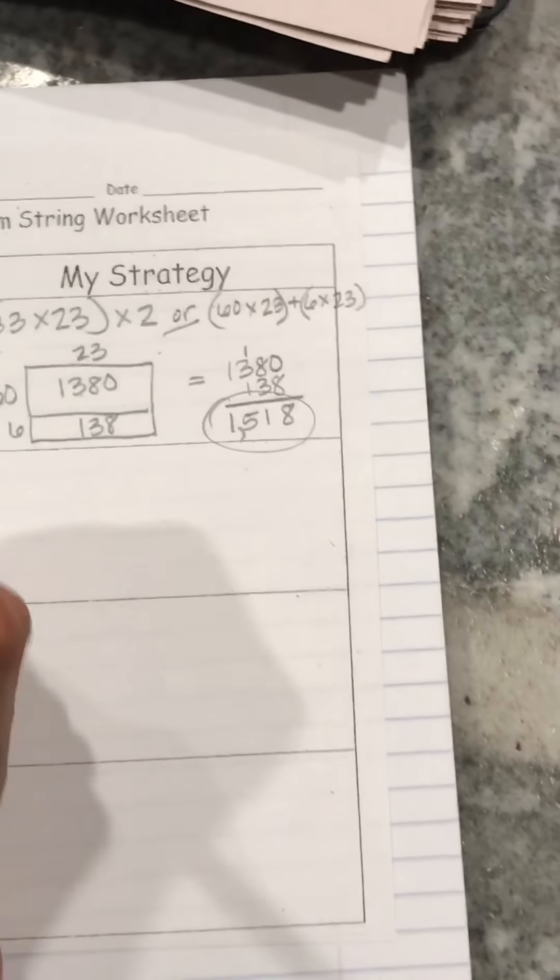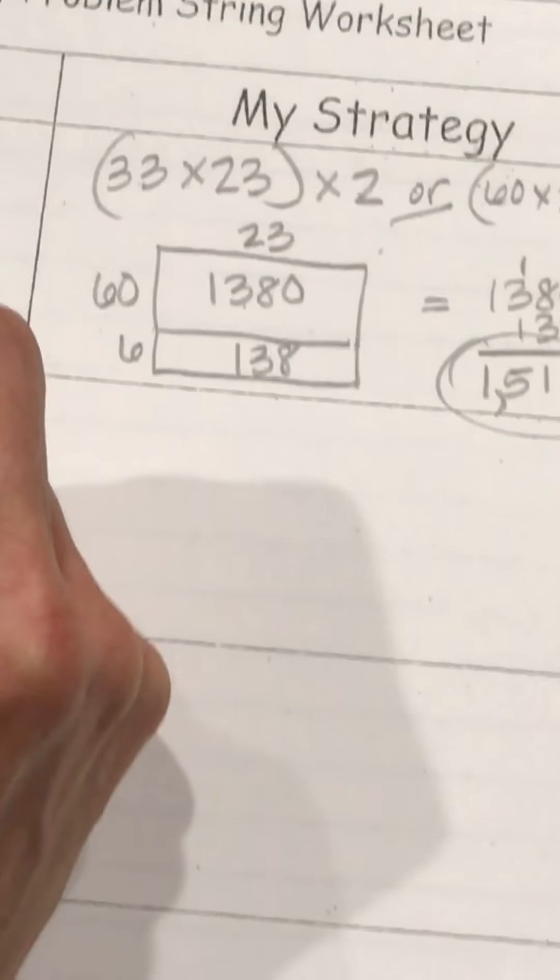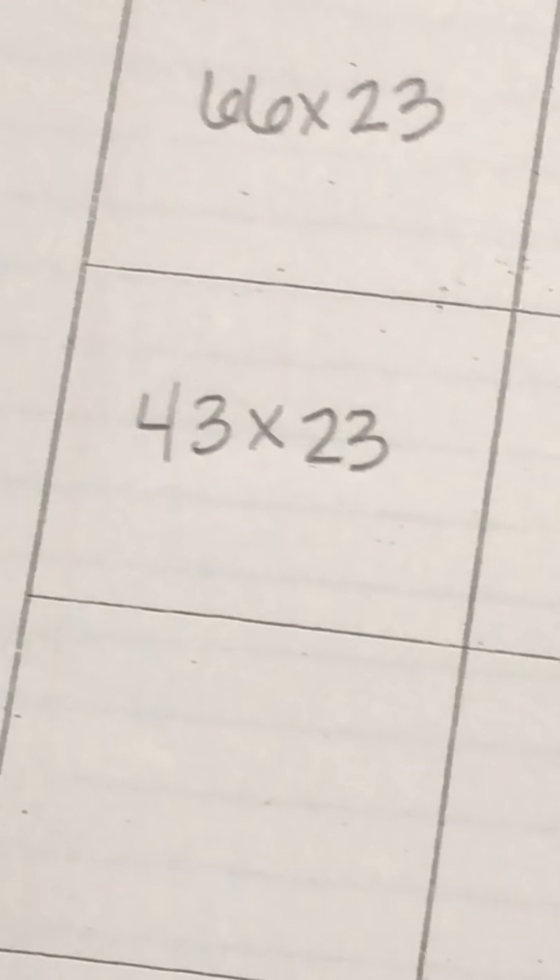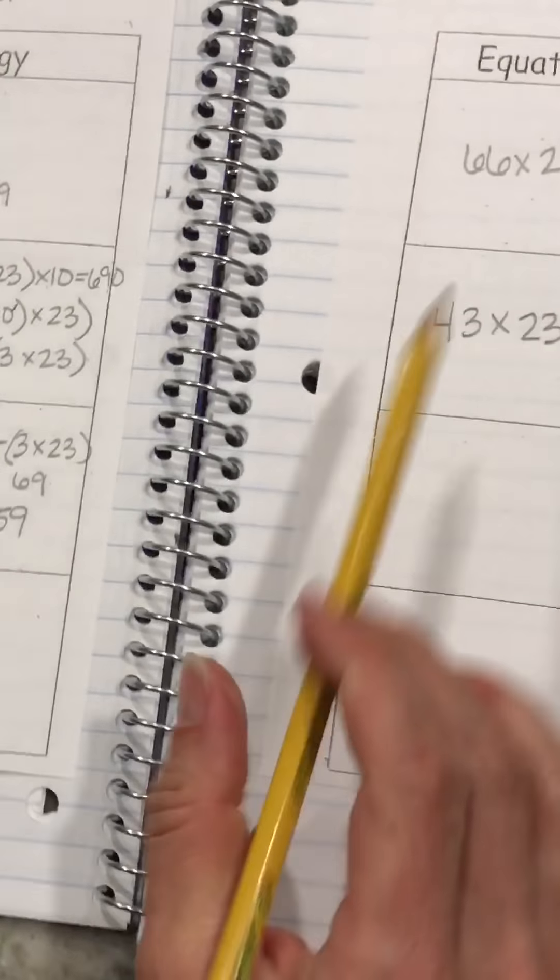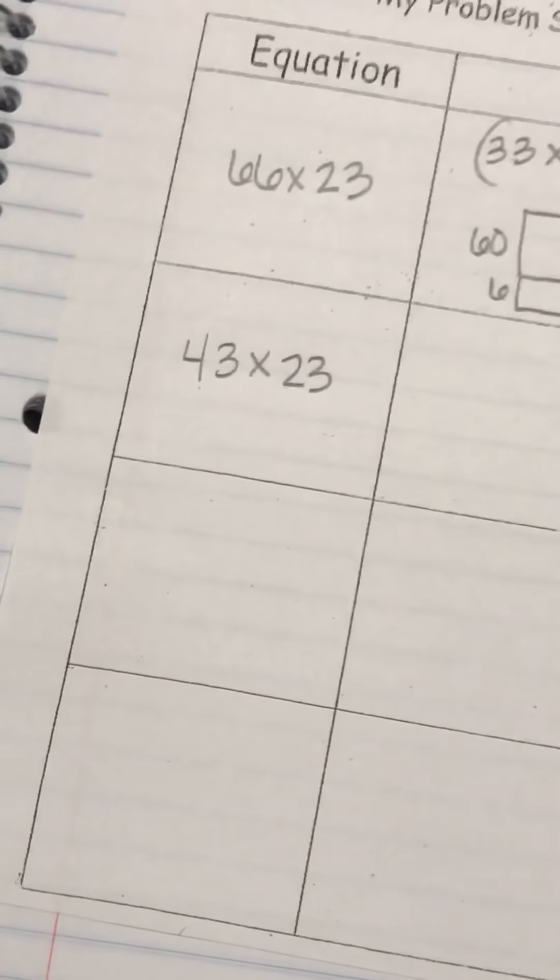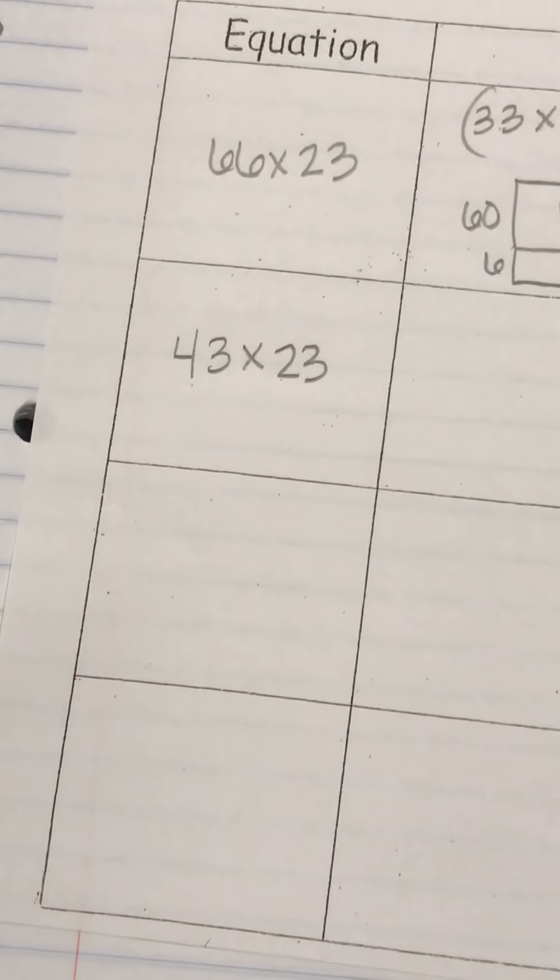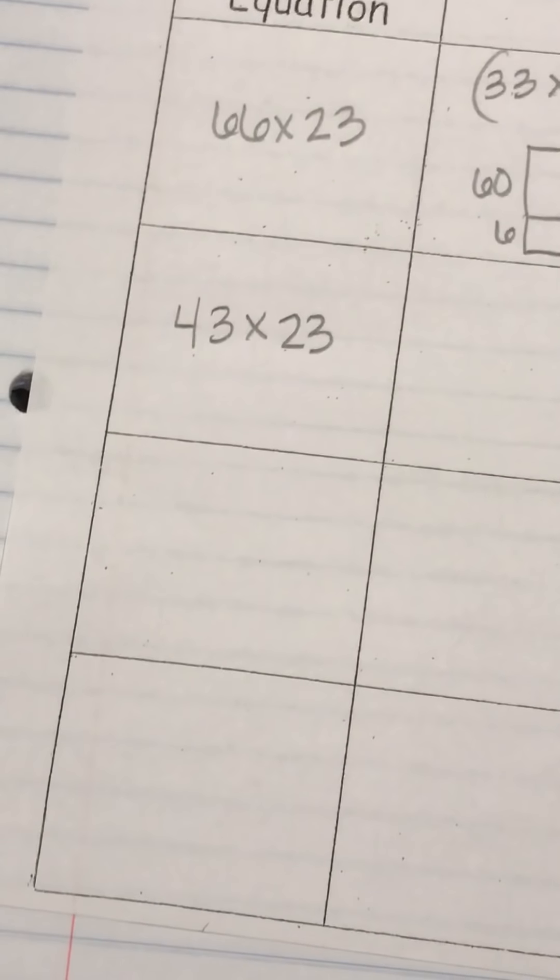I have one more, which is 43 times 23. And you can try and do this using partial products. Try and figure it out on your own, how you wish to do it. There's lots of ways to break up 43. You can use some of the information that we have from a previous problem, or you can break it up on your own. But I look forward to seeing what it looks like in class. Have a good night.